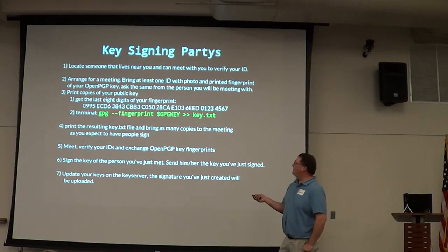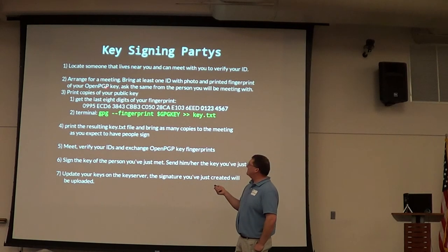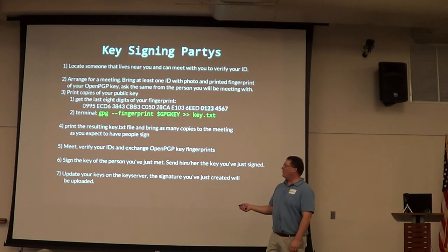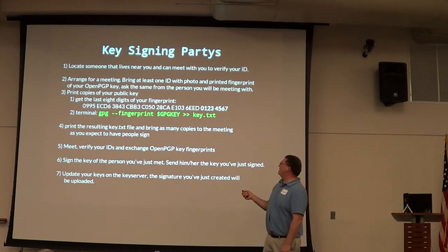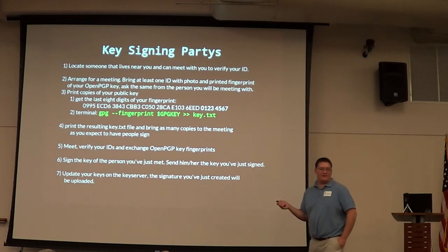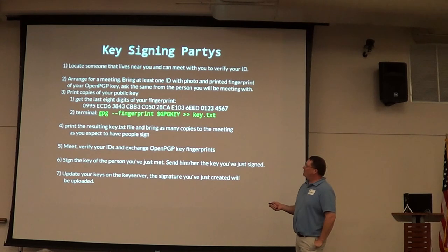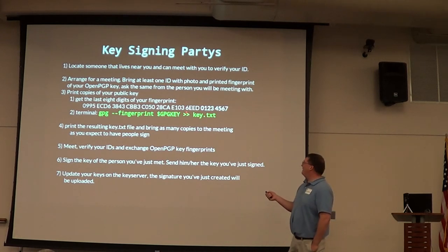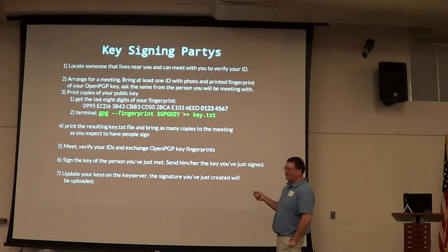At the key signing party, you want to bring an ID that everybody knows and print off copies of your public key. You can do the full public key, which prints off on a full-size sheet of paper, or you can do just the fingerprint of the key. To get your key fingerprint, you can export it into a text file — you say 'GPG, export just my fingerprint using this key' which we set up in the environment variable, and redirect it into a file using command line redirects.